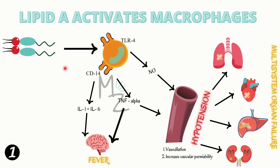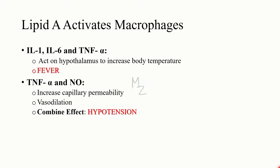Lipid A binds to macrophage receptors and is responsible for releasing cytokines: interleukin-1, interleukin-6, TNF-α, and nitric oxide. Interleukin-1 and interleukin-6, along with TNF-α, act on the hypothalamus. There is a specific part of the hypothalamus responsible for maintaining body temperature — when these cytokines act on that part, it increases body temperature. This increased body temperature is called fever, which is the first symptom.